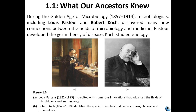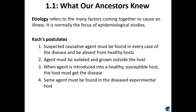Koch's postulates: first, you must be able to observe a causative agent found in a sick individual but not in a healthy one. Then you must isolate that agent from the host and grow it. After that, you introduce the agent into a healthy person — if that person then develops the same disease from the same agent recovered from them as from the originally sick person, then you've confirmed it as the causative agent for that disease. It seems pretty simple, but he was the first to figure it out.